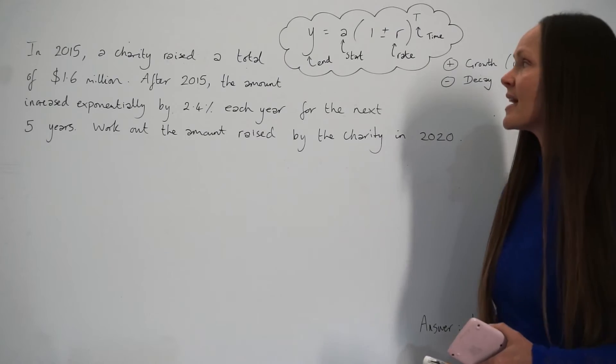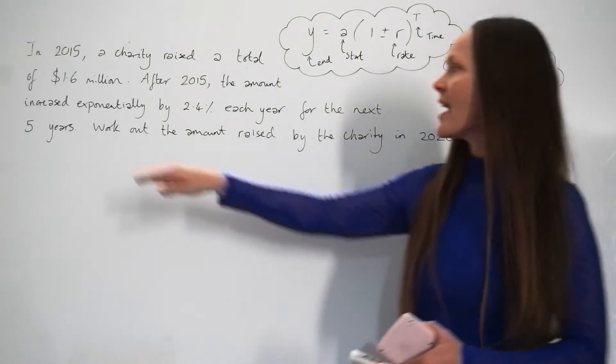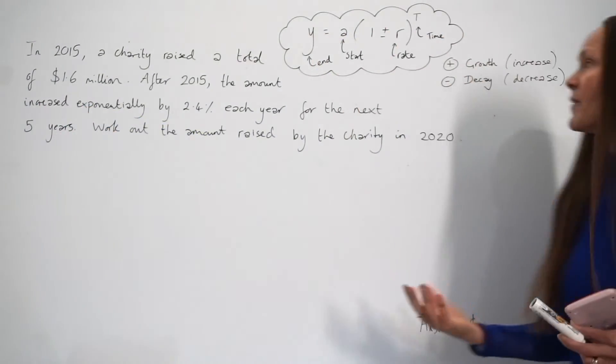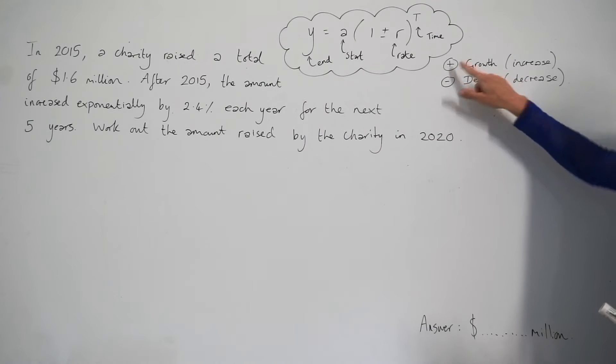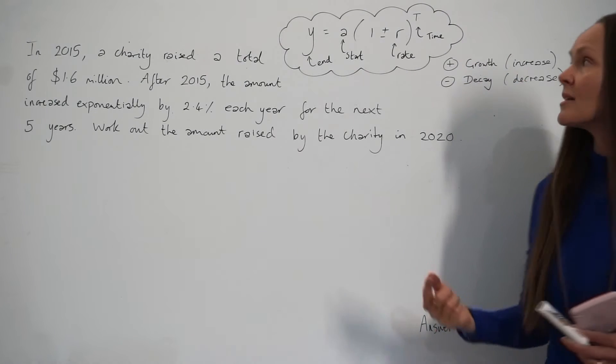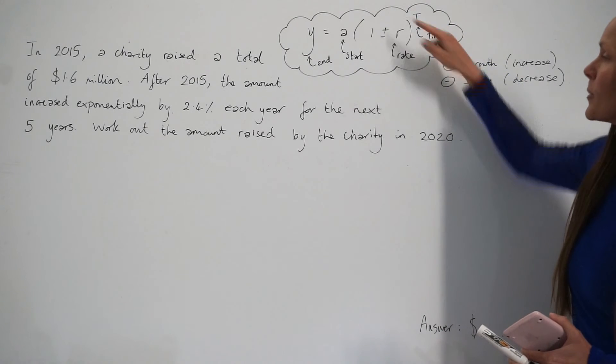So in this question, it says the amount increased exponentially instead. So that's an example of exponential growth. So you have to remember to use the plus symbol here when applying the formula instead.